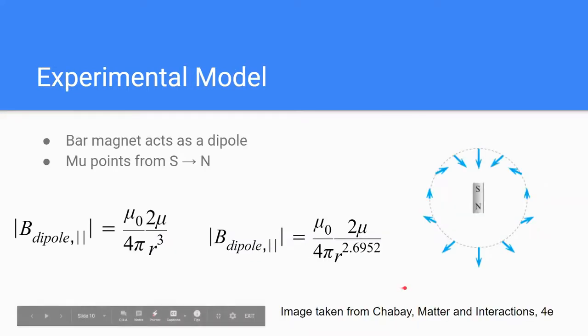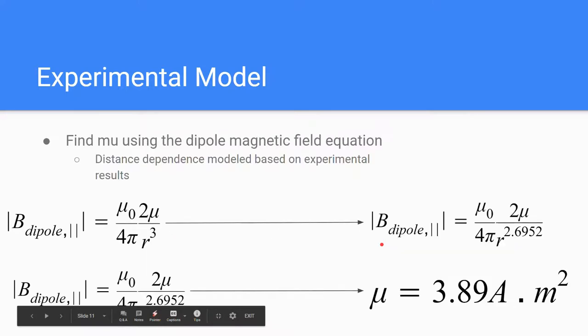A bar magnet can be modeled as a magnetic dipole with mu pointing from south to north in a magnetic field that looks like this. Because of this, we can model our on-axis magnetic field starting with the on-axis dipole equation and substituting the value for the distance dependence with our measured value. And then using this altered equation, we can plug in measured values for B and for r to find a value for mu that we will be using in our code.